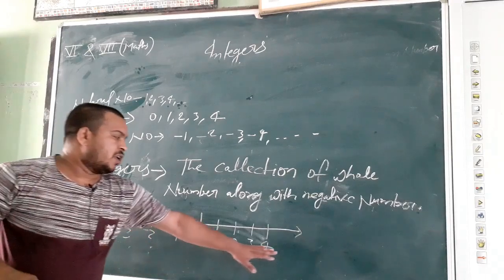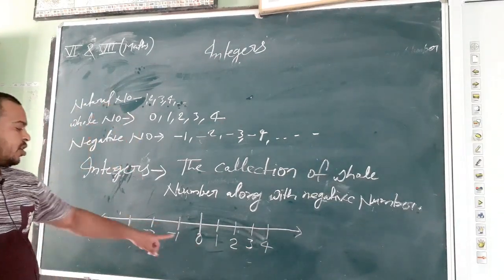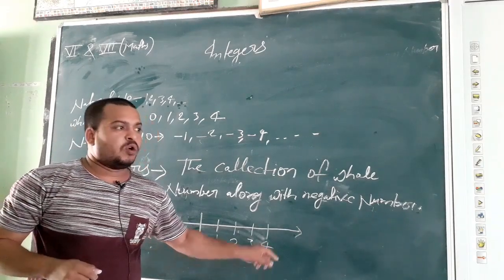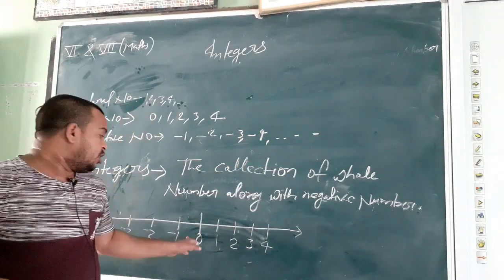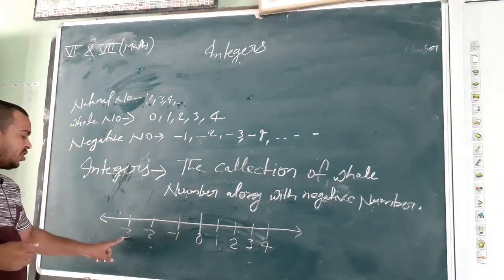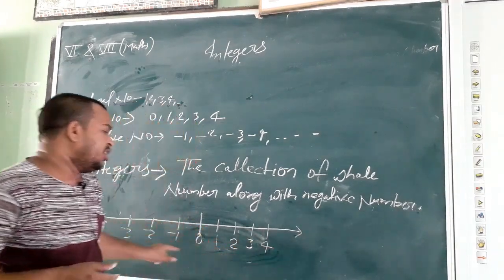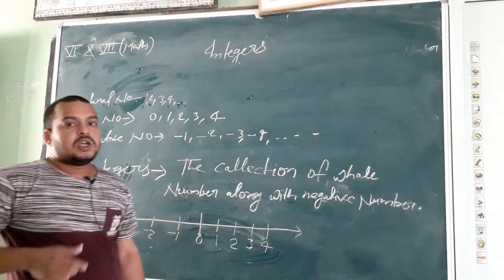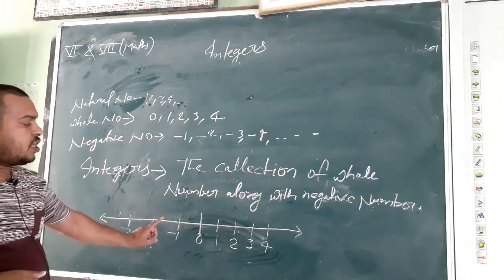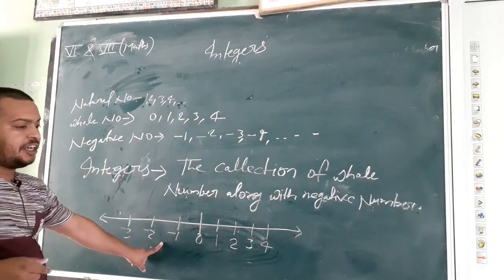All the numbers on the number line represent integers. So 0, 1, 2, 3, 4, 5, 6 and so on, and minus 1, minus 2, minus 3, minus 4 till infinity are known as integers. We can say that all natural numbers are integers and all whole numbers are integers.